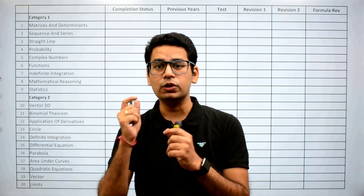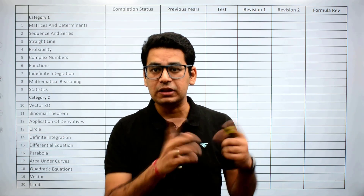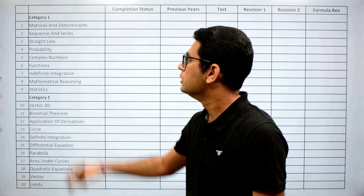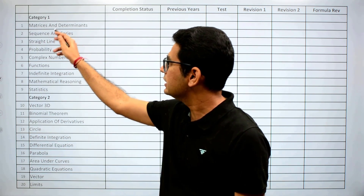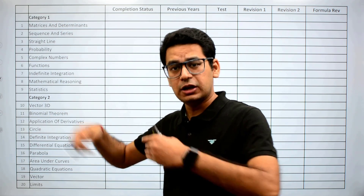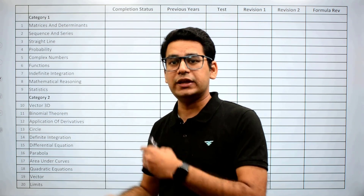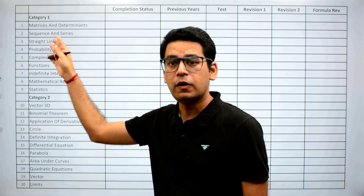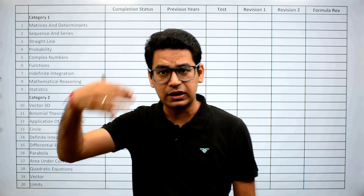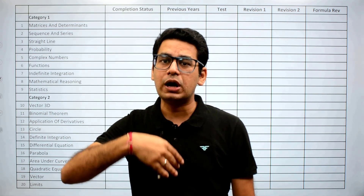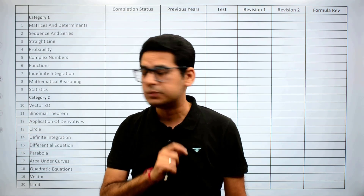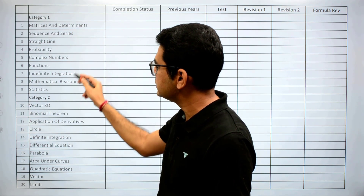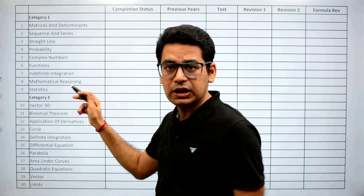This tool is for maths; similarly there is a tool for physics and chemistry also. I am going to explain using maths — how to do it in maths — and you can repeat the same approach for physics and chemistry. Category one is the most important topics that you should do in your last 30 days. You should focus more on them.